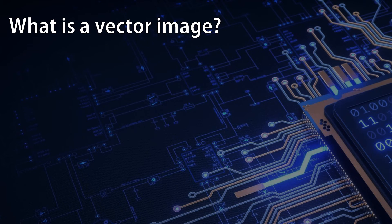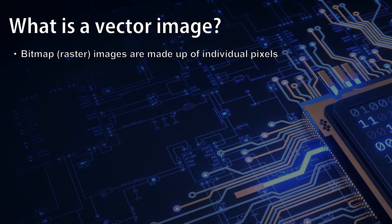You will recall at GCSE we looked at bitmap images, also sometimes referred to as raster images, and we saw that they're made up of individual pixels. If you haven't covered this, you should go back and look at this material, because while I'm not making videos in the A-level course about it, it is still coverable as part of the A-level curriculum.